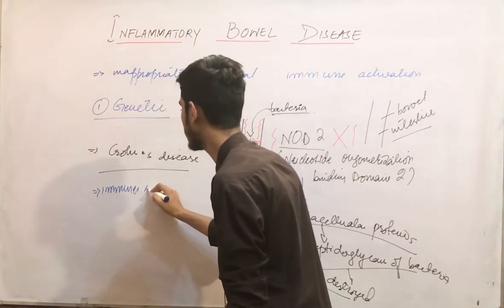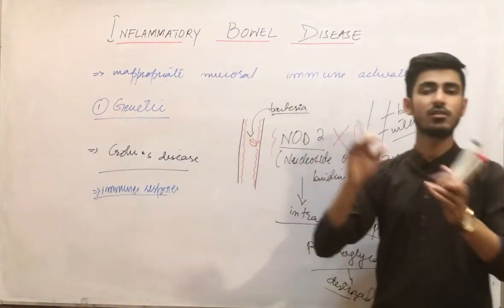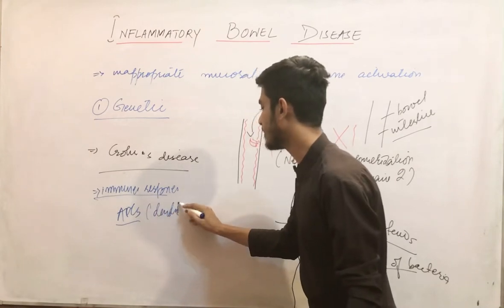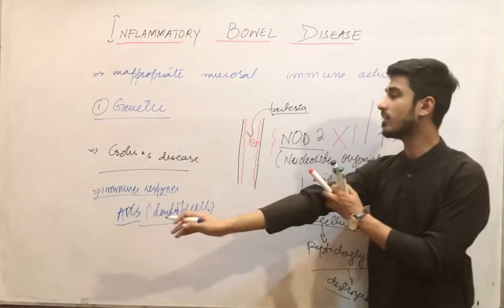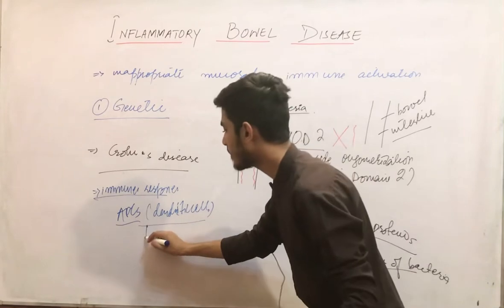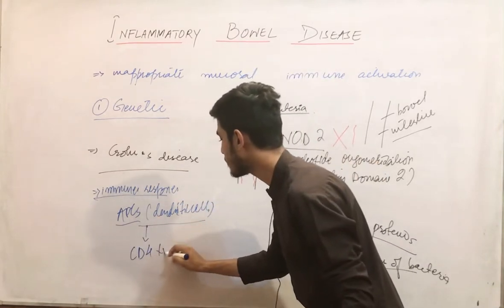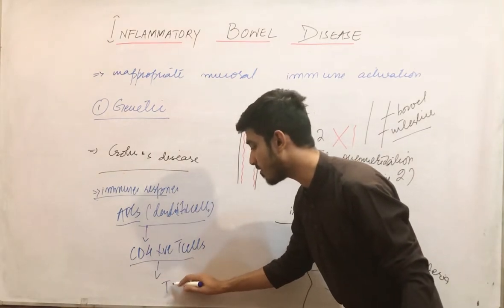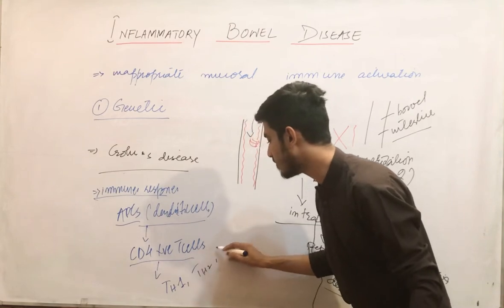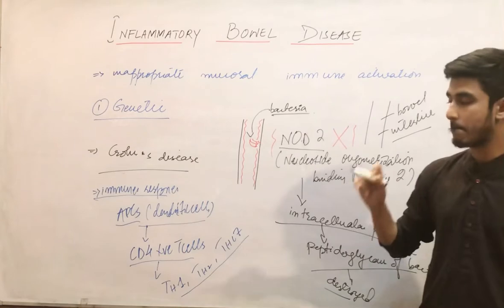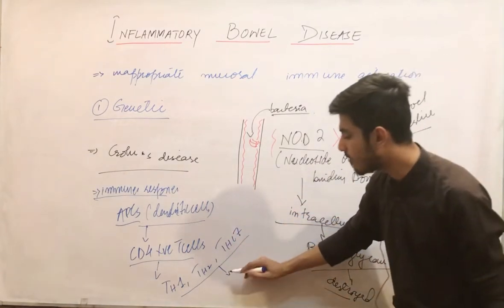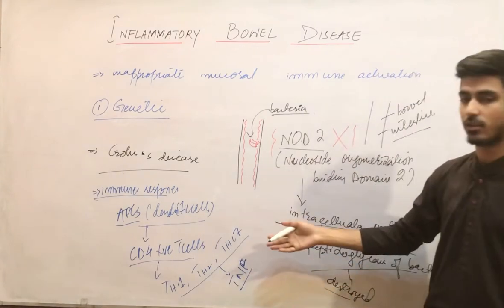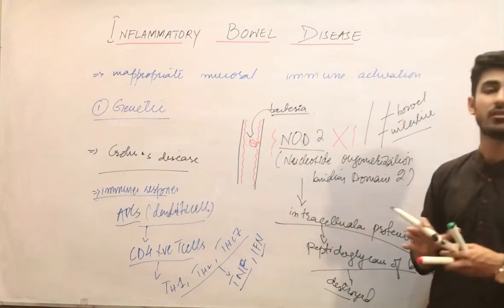When bacteria enter into the cell, our immune response is activated. The bacteria is recognized by antigen-presenting cells — APCs — which are our dendritic cells. These dendritic cells recognize the bacteria as a foreign body and they activate CD4-positive T cells. When these CD4-positive T cells are activated, they activate T-helper cell 1, T-helper cell 2, and T-helper cell 17. When these cells are activated, they produce certain cytokines and inflammatory factors — like tumor necrotic factor, which is very important, interferons, and many other inflammatory factors.